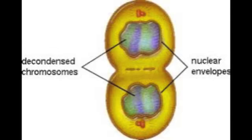In telophase, the nuclear membrane reforms around the chromosomes grouped at either end of the cell. Also, the chromosomes uncoil and become diffuse, and the spindle fibers disappear, which also leads to the nuclear envelope reforming.